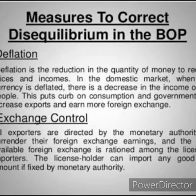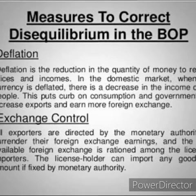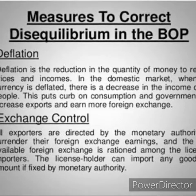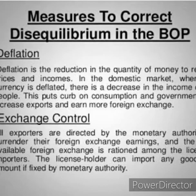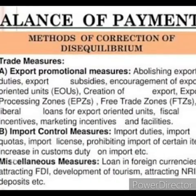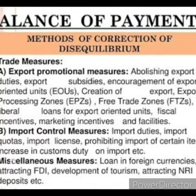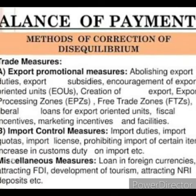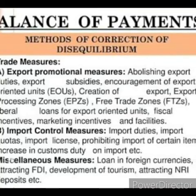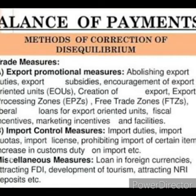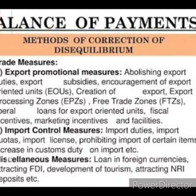In order to control this inflation — inflation means increasing the price level — the central monetary authority controls credit, that is, giving loans. By controlling credit, prices come down and exports increase. If they stop giving credit, prices will decrease and exports will increase. This will help to correct the adverse balance. However, if credit is controlled, investment will decline, production will go down, and prices will increase.